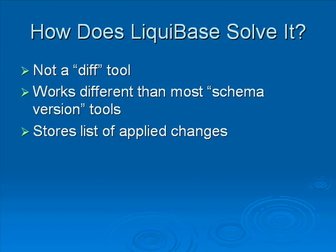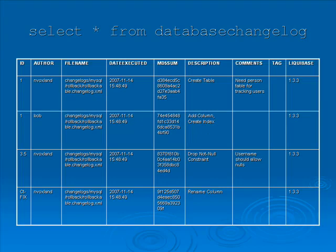Instead, what Liquibase does is it stores a list of all of the applied changes, and any new changes that have been applied the next time it's run are going to be executed, regardless of the database version. The most important columns in the database change log table are the ID, the author, and the file name. Those three values together constitute a unique identifier for each change, so you don't have to worry about conflicts with multiple developers generating the same ID, or even the same author generating the same ID in multiple different files.